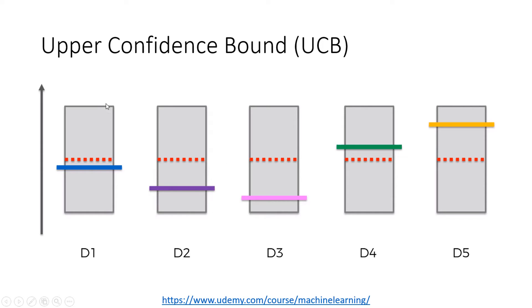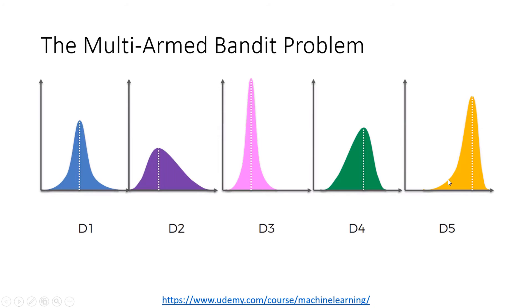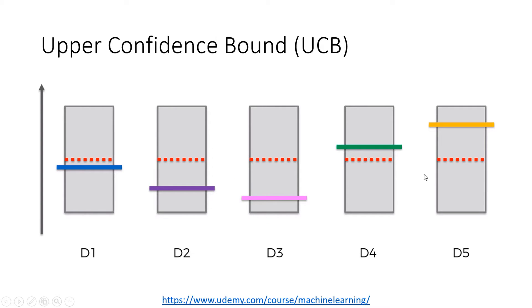What is happening here? These are the machines — we have five machines. We start by supposing that all of them have the same distribution, represented by these red stripes here. We are going to call these red lines the observed average. These colored lines are the actual distributions — this is where the observed averages are supposed to converge to. This is the best distribution.